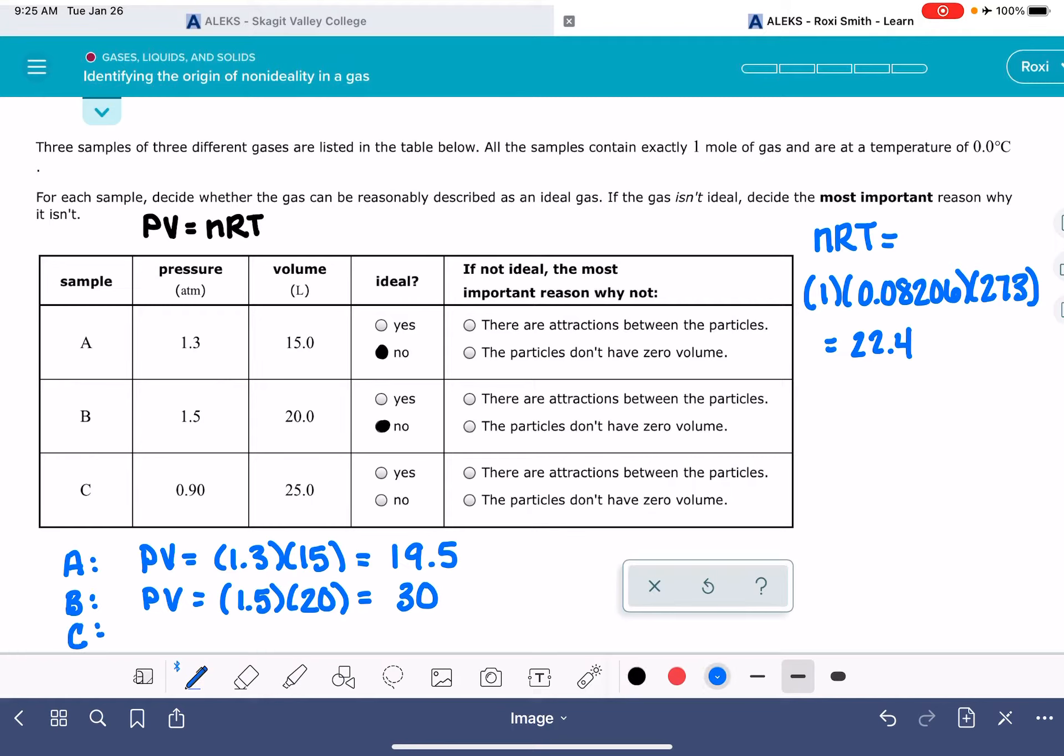For gas C, pressure times volume is 0.9 times 25, which is 22.5. And I think that's close enough for Alex. We'll say that, yes, that one is an ideal gas.